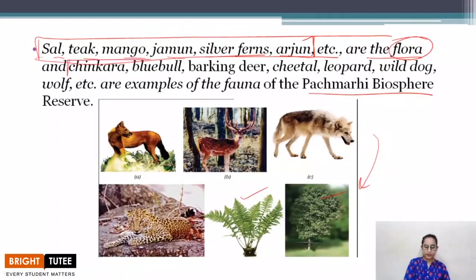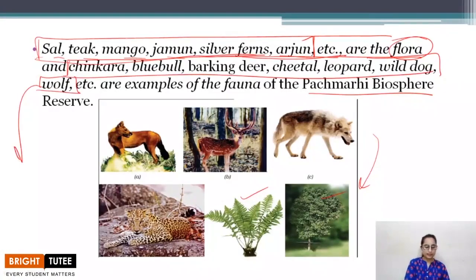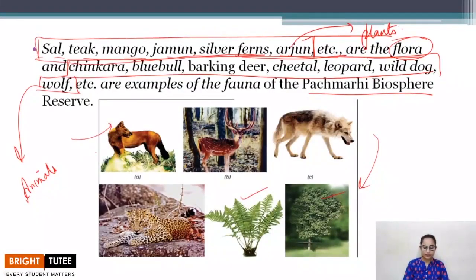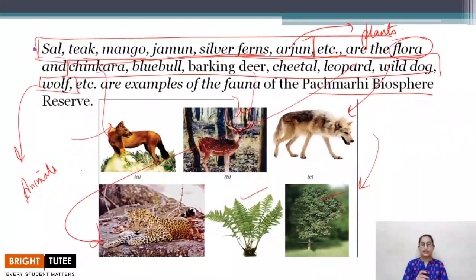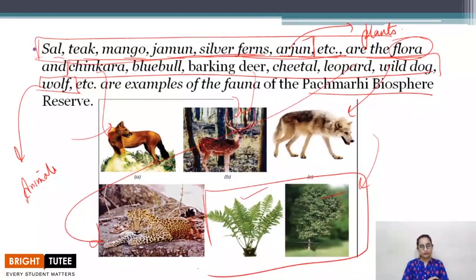Chinkara, blue bull, barking deer, cheetah, leopard, wild dog, and wolf are the fauna of the Panchmarhi Biosphere Reserve. In the pictures you can see barking deer, wolf, wild dog, leopard, and chinkara — these are the animals found in the Panchmarhi reserve.